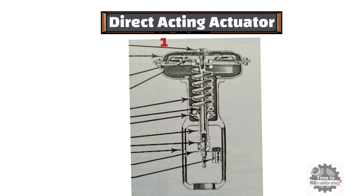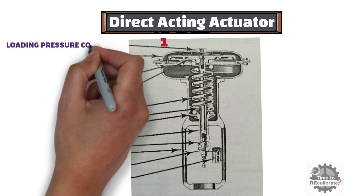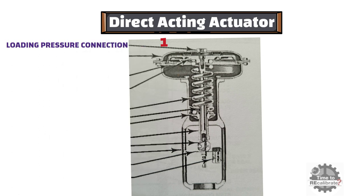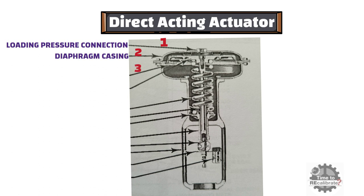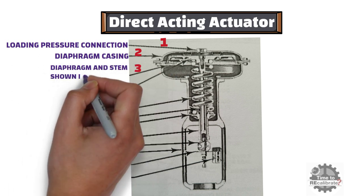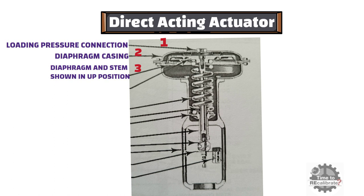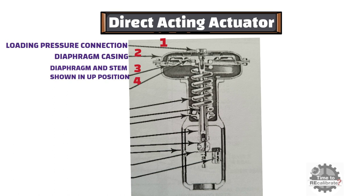As you can see, first number part is loading pressure connection. Second number part is diaphragm casing. Third number part is diaphragm and stem, which is shown in up position. Fourth number part is diaphragm plate.